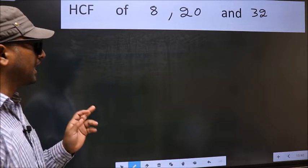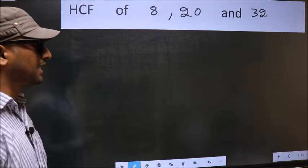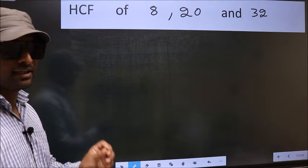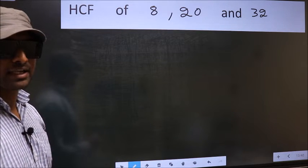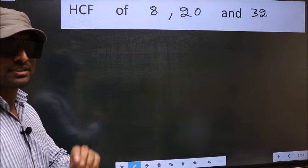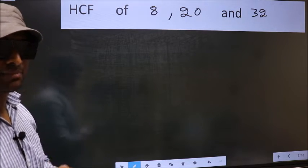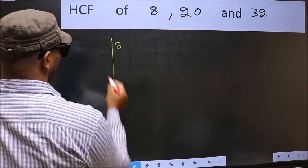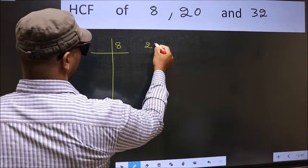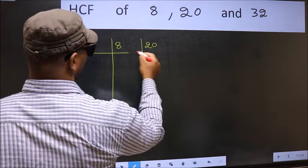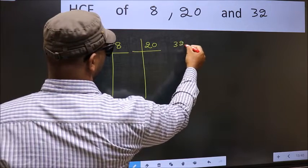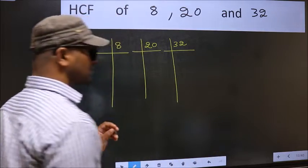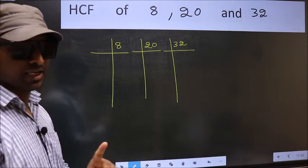HCF of 8, 20 and 32. To find the HCF, we should do the prime factorization of each number separately. What I mean is 8, 20, 32. This is your step 1.